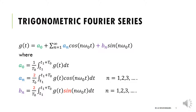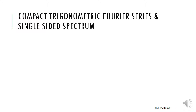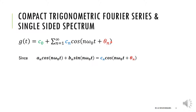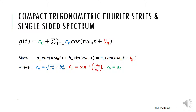We can also have a compact version of the trigonometric Fourier series. The function g(t) is represented as c naught (the average value) plus a cosine with magnitude c_n and phase shift theta_n. A sum of cosine and sine at the same frequency with different scaling factors can be written as one compact cosine term with an additional phase. Given a_n and b_n, we find c_n as the square root of a_n squared plus b_n squared, and theta_n as the arctangent of minus b_n over a_n.